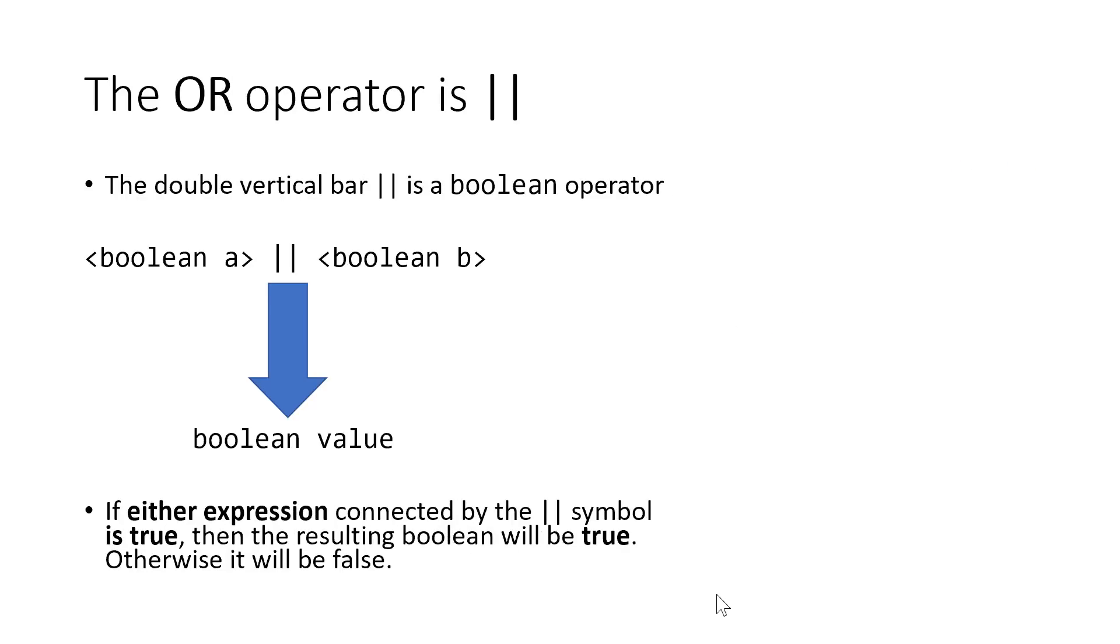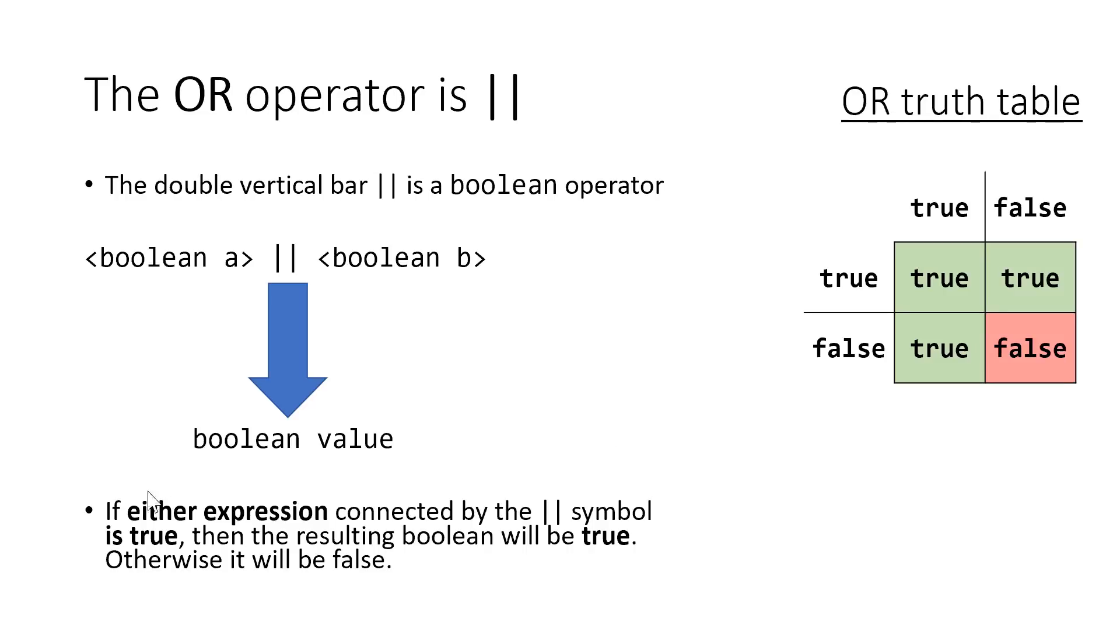The or operator is two vertical bars side by side. You can write a vertical bar on your keyboard by holding down the shift key and pressing the button right above the enter. So we would read this expression here as A or B. If either are true or both are true, then the resulting value will be true, otherwise false. And we can express this in a truth table as well. So if A is true and B is false, we still get a value true out of the or operator. But if both are false, the resulting value is false.